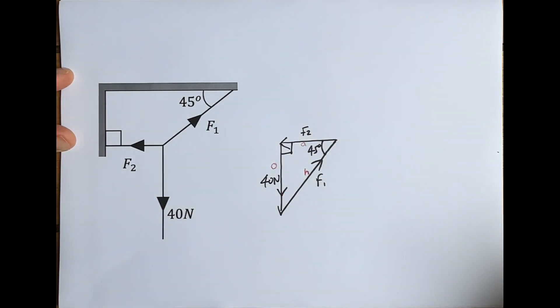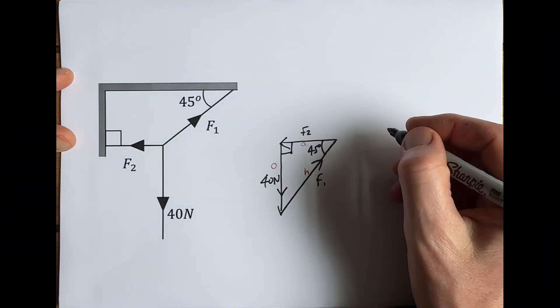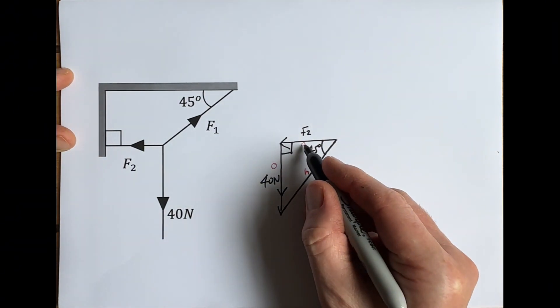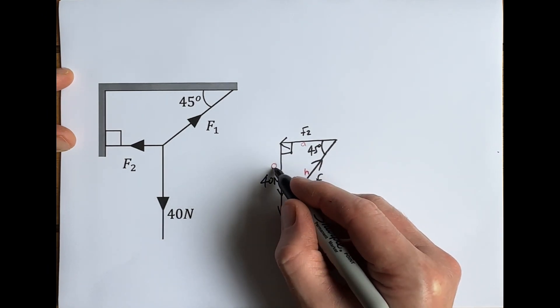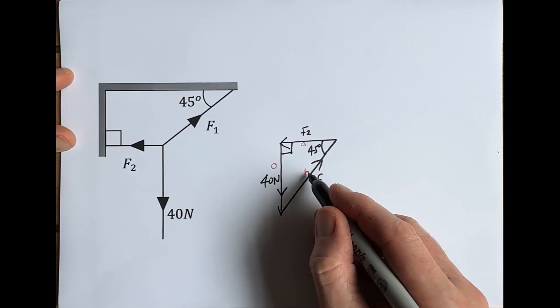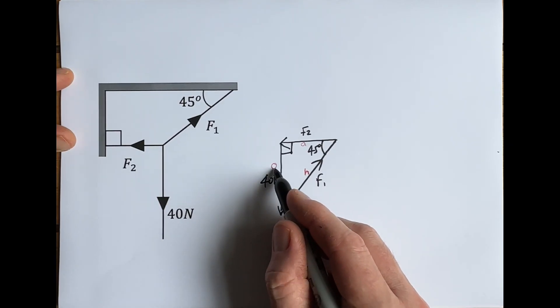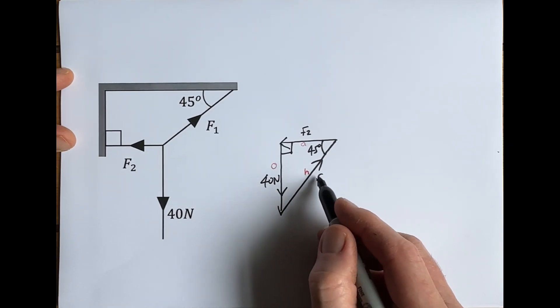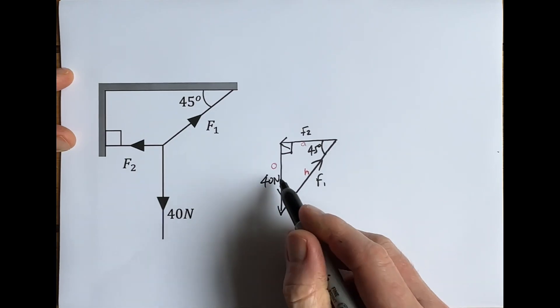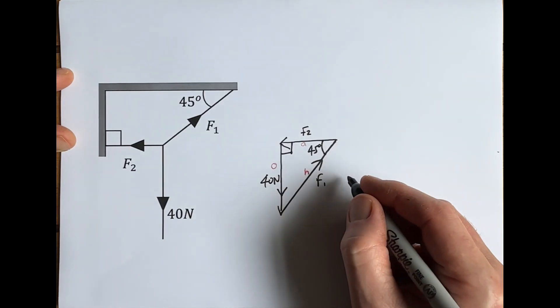So we've got hypotenuse, adjacent, opposite. For example, if we want to work out F2, it is the adjacent and this is the opposite, so we're going to need to use tan. If we want to work out F1, we're going to use the known value of 40 newtons—that's opposite—and we're going to try and work out the hypotenuse, so opposite and hypotenuse we're going to need to use sine.